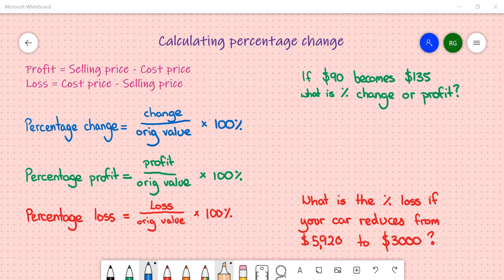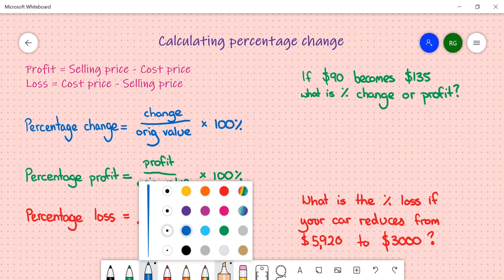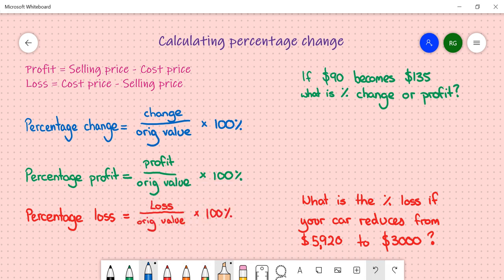Now, looking at the blue section, percentage change is determined by working out what the change is, as in how much it changes, divided by the original value. That will give you a fraction, and then you multiply it by 100% or 100 over 1.